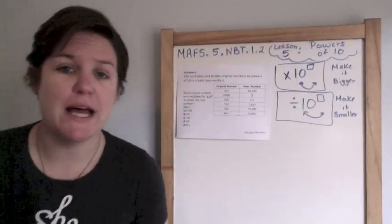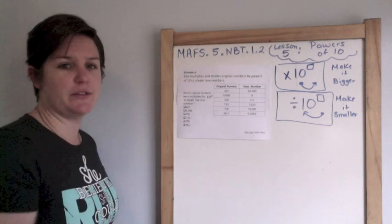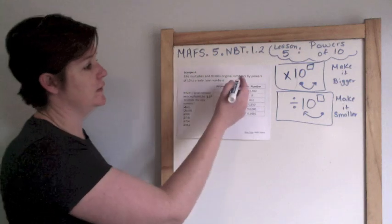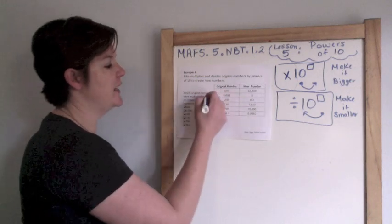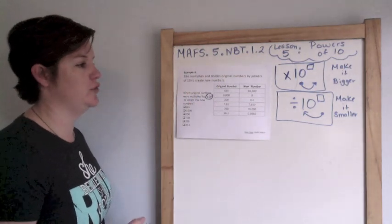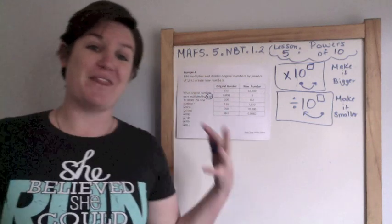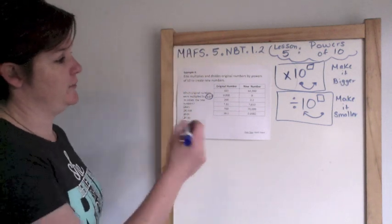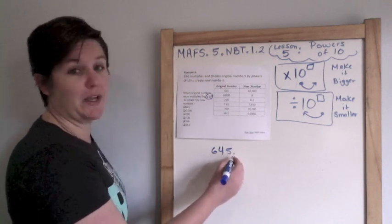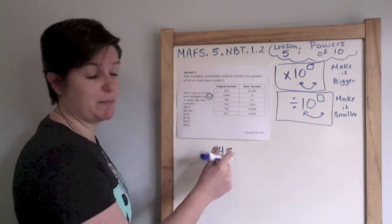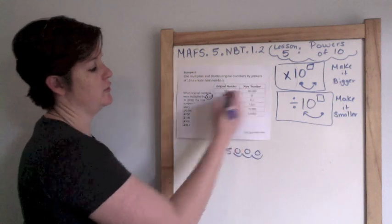Example four. Ellie multiplies and divides original numbers by powers of 10 to create new numbers. So here are her original numbers. Then she multiplies by powers of 10 and divides. Which original numbers were multiplied by 10 to the third power to create new numbers? So I need to look at my original numbers and see which ones have been increased 1,000 times by 10 to the third power. So three place values. So I have 645. My decimal's right here. Now I'm going three places to the right to make it bigger. That's right to the right. So one, two, three, zero, zero, zero. This one only has two zeros. So it can't be 645.